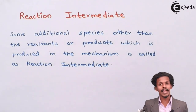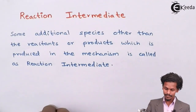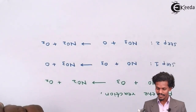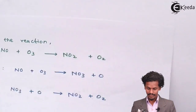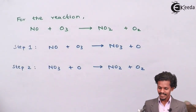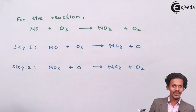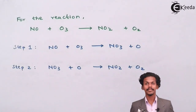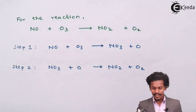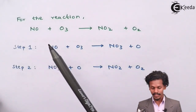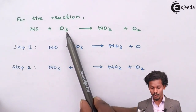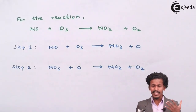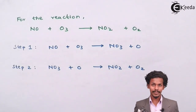To understand this better, I have given you an example. Suppose the reaction in which NO plus ozone gives nitrogen dioxide plus oxygen — this reaction is formed in two steps.